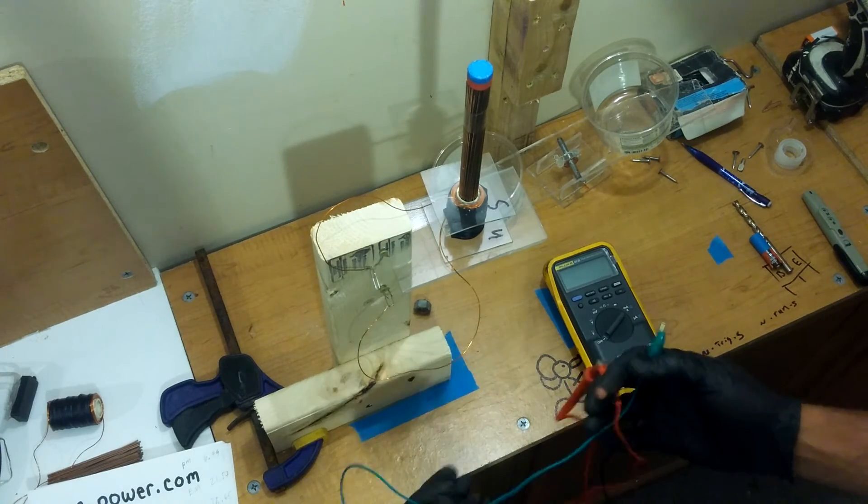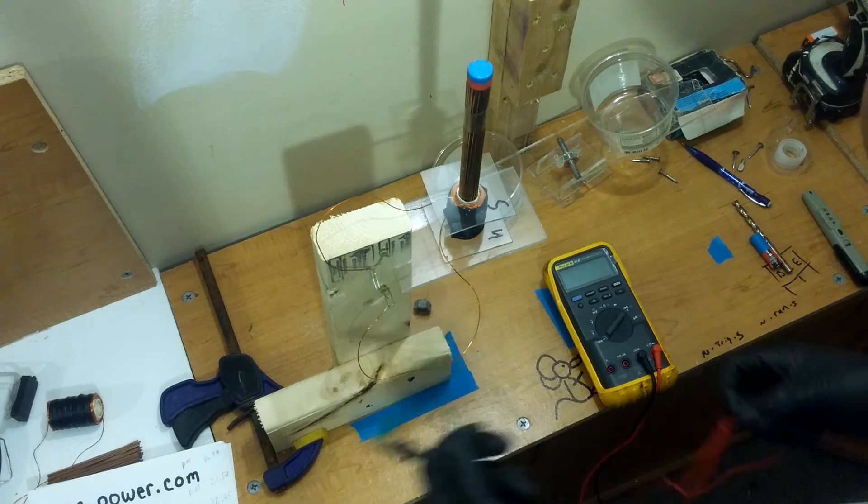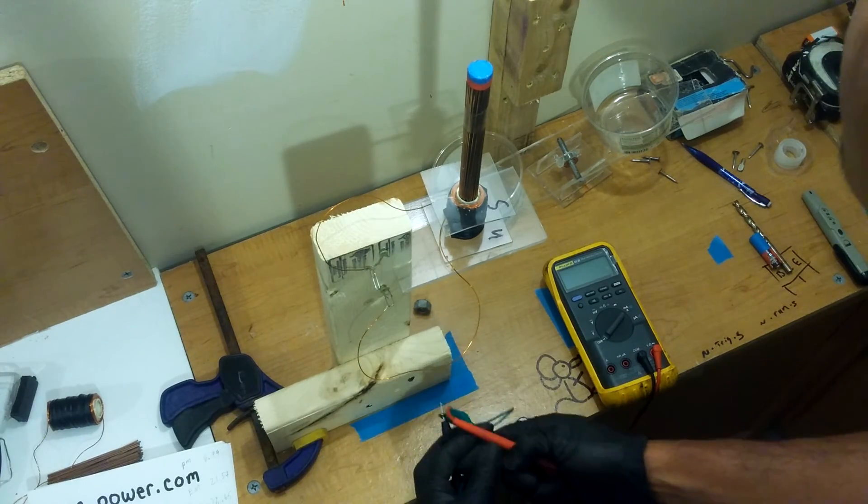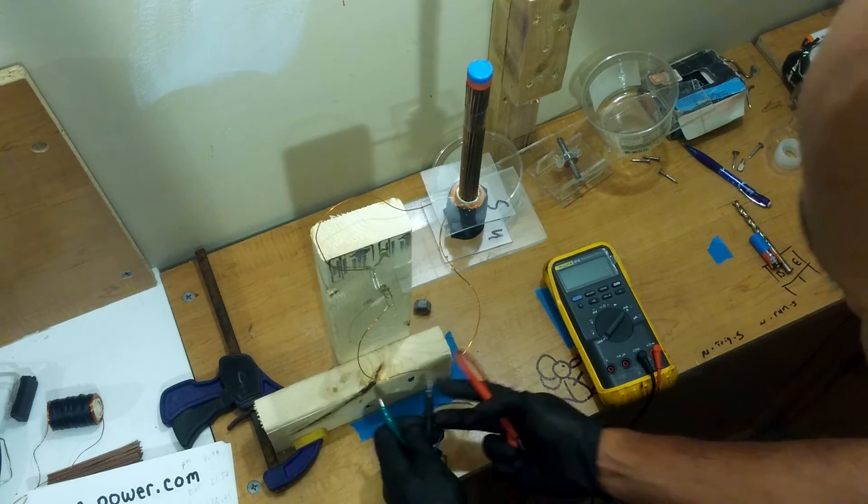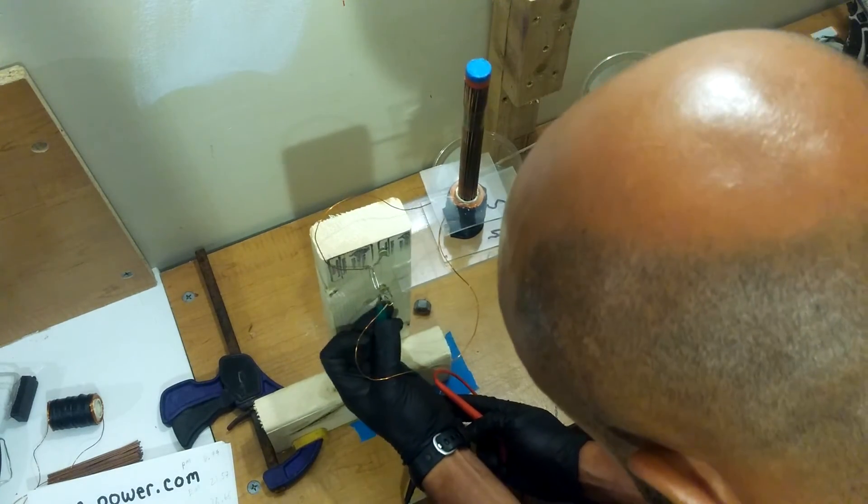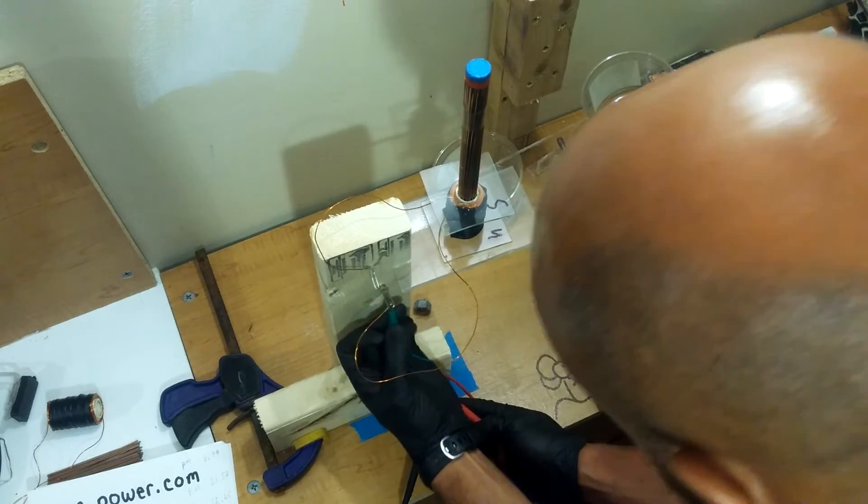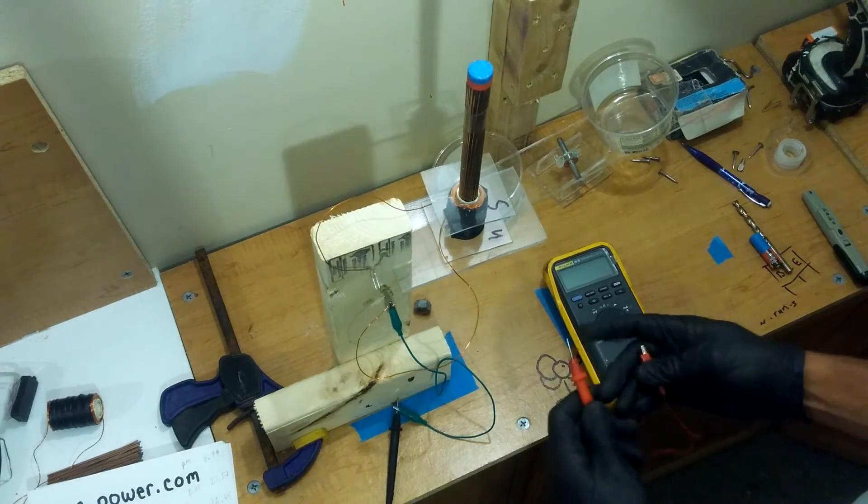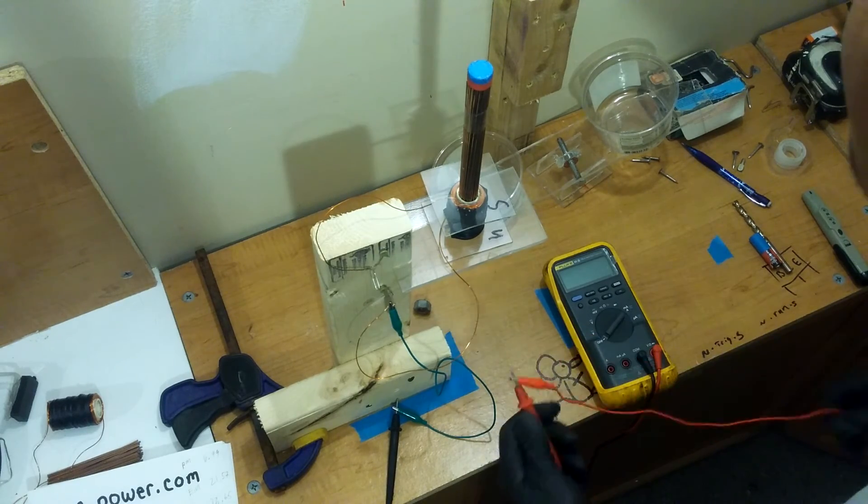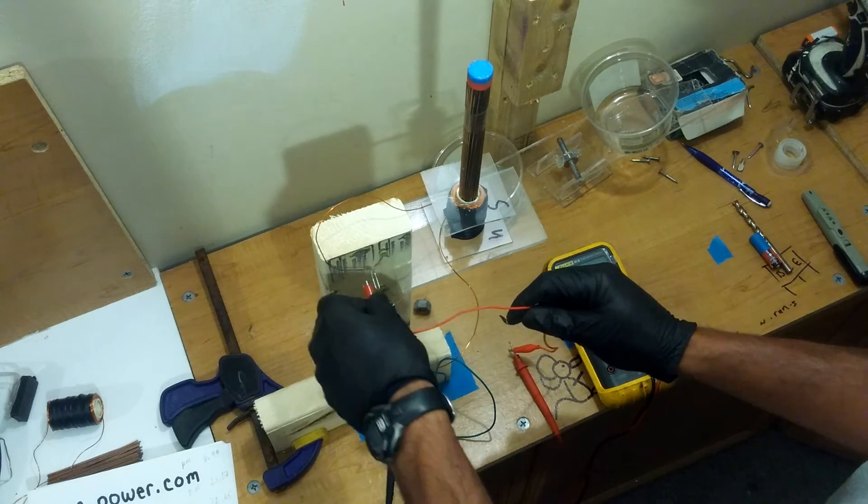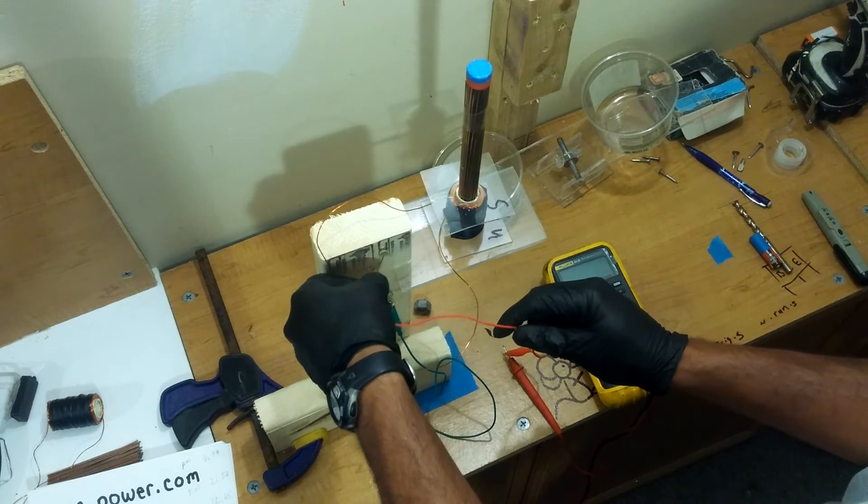I have alligator clips connected to the common. We'll hook up to the north side, and then we have connection to your negative on the cell.